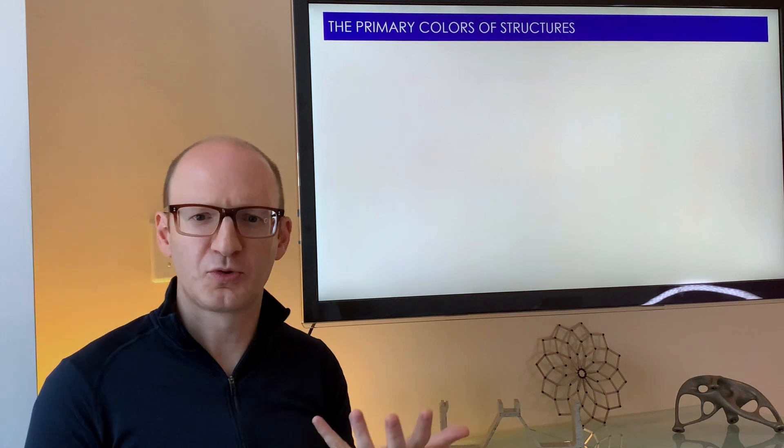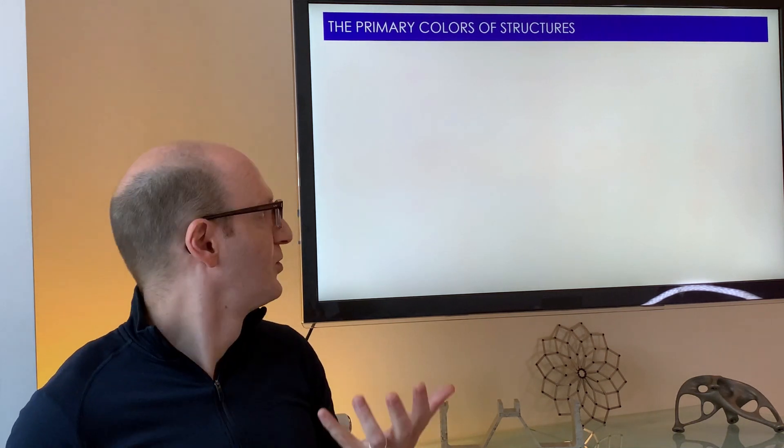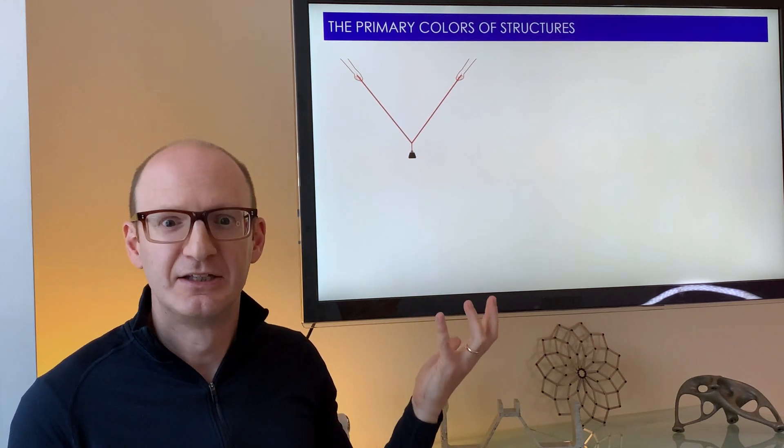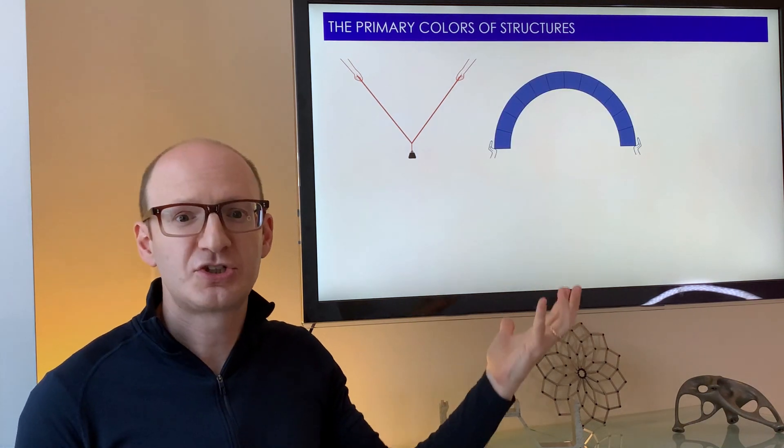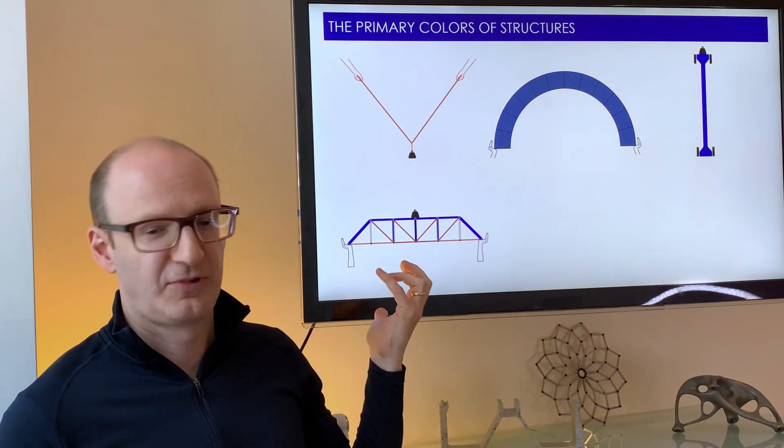So if we go through them in increasing order of complexity, we would have a cable that can only carry tension, and you can see the direction it's carrying the tension in. You have the arch, the column, the truss,